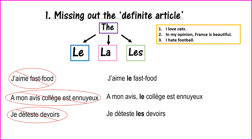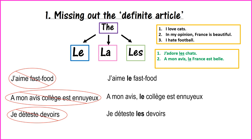On your screens now you will see three phrases. Please pause the screen and try your best to translate those. Let's now look at the answers. Numéro un: 'J'adore les chats' — we've added the definite article and made it plural because cats is plural. Numéro deux: 'À mon avis, la France est belle' — France is a feminine country, so we say la. Did you remember to put belle instead of beau to agree with the feminine noun? Numéro trois: 'Je déteste le foot.' Nice and easy.